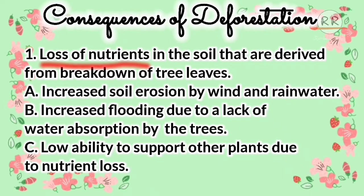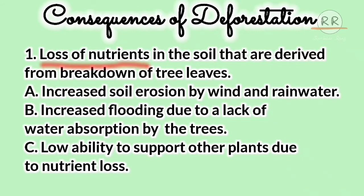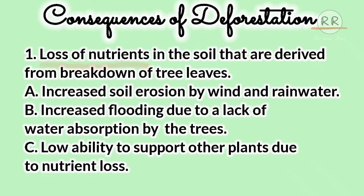पहला है: Loss of Nutrients in the Soil। जहाँ बहुत सारे पेड़ होते हैं, लाखों की तादाद में, जब पतझड़ का मौसम आता है तो उनसे पत्ते झड़ने लगते हैं और वो पत्ते जमीन पे आ जाते हैं। जैसे जैसे समय गुजरता है, उन पत्तों की decomposition होके वो जमीन में खत्म हो जाते हैं, और उन पत्तों के अंदर जो nutrients होते हैं वो जमीन के अंदर चले जाते हैं। तो अगर deforestation होगी, लाखों की तादाद में पेड़ कट गए, तो जमीन के अंदर जो nutrients हैं वो कम हो जाएंगे क्योंकि पत्ते नहीं होंगे।